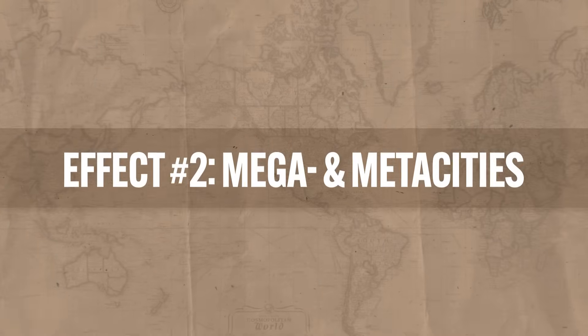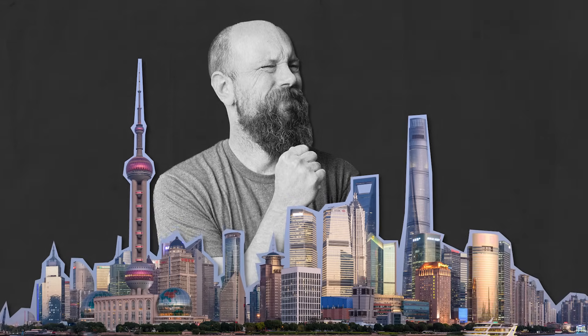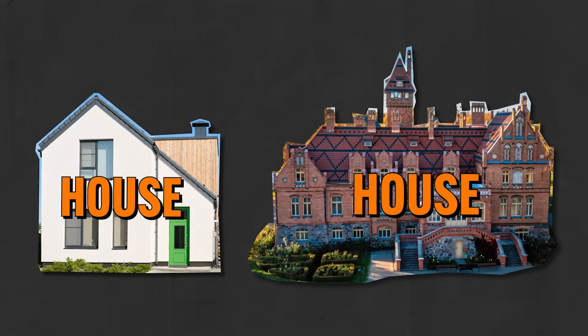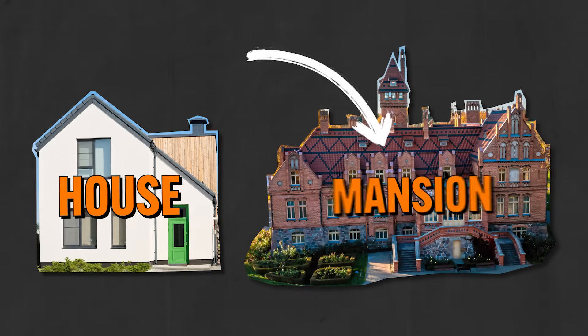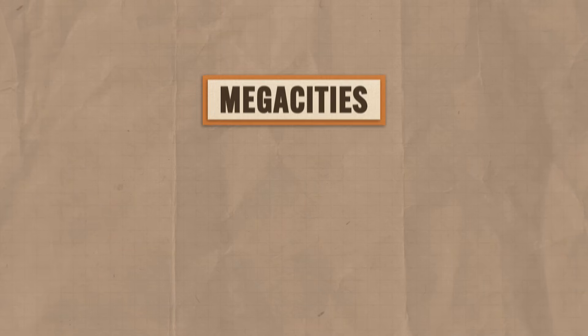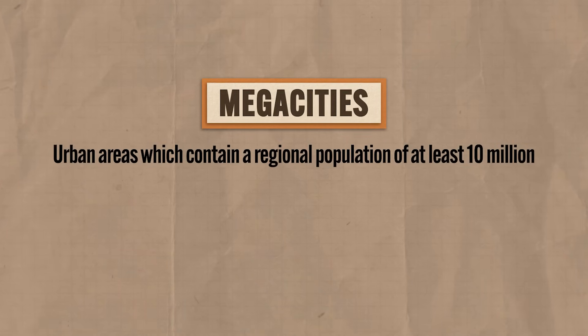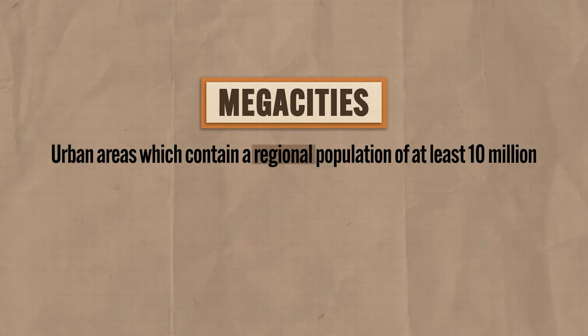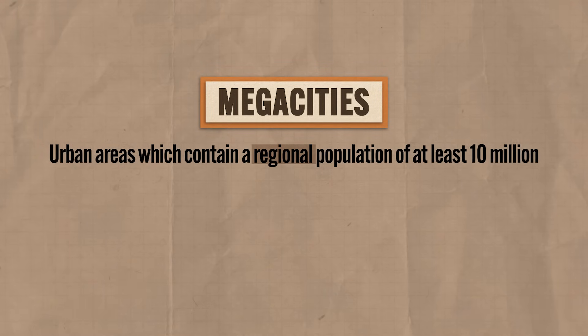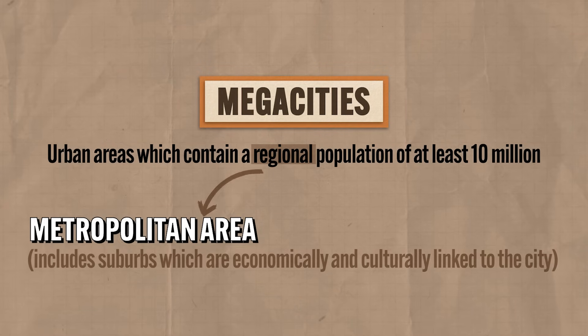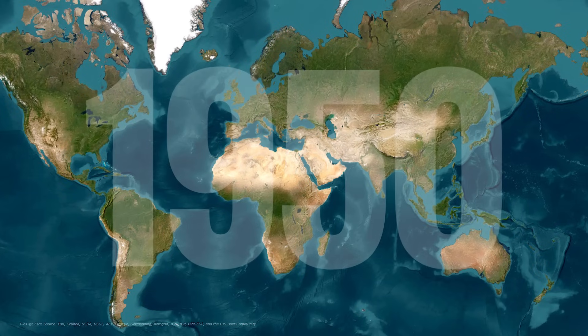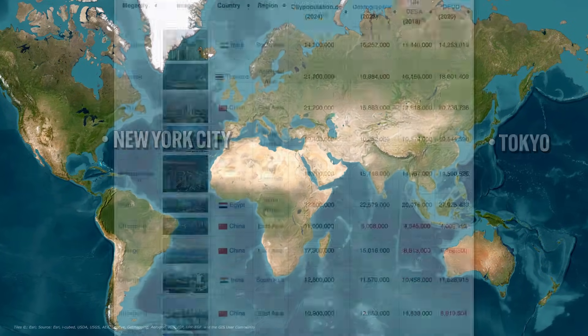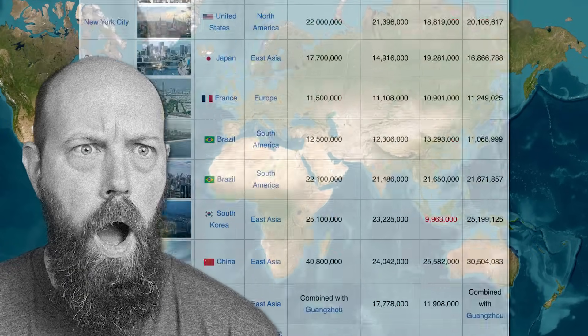And now the effect of urban growth you've all been waiting for: megacities and metacities. It shouldn't surprise you that some cities have gotten so stinking big that we had to think up new terms to describe them. Megacities describe urban areas which contain a regional population of at least 10 million. Don't miss that emphasis on regional, since the megacity encompasses not only the city proper but also the larger metropolitan area which includes the suburbs economically and culturally linked to the city. In 1950 there were only two megacities in the world — New York and Tokyo. Today there are more than 30 megacities.